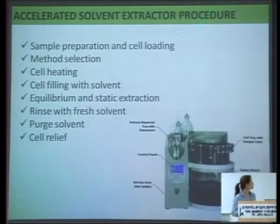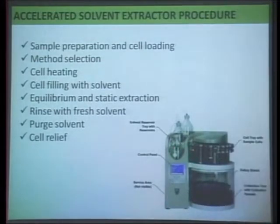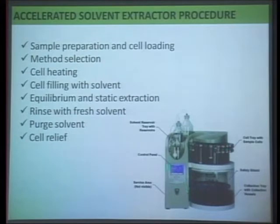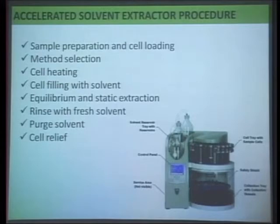This is the ASE — the accelerated solvent extractor. For the procedure, we load our sample in these vessels and select the method on the display. The cells go into the oven where they are heated to temperature equilibrium and extraction takes place. Then we collect the extract in glass vials for chemical analysis.